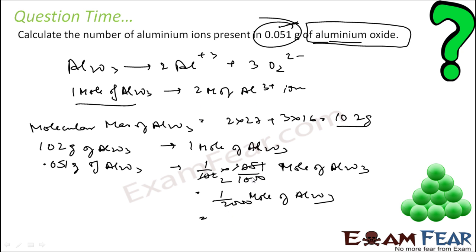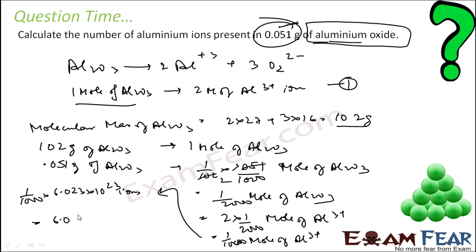These moles of Al2O3 give twice the moles of aluminum ions. That is 1 by 1000 mole of aluminum ions. We have to find the number of ions. 1 mole is 6.023 into 10 to the power 23 ions. So these moles into that magical number equals 6.023 into 10 to the power 20 ions.